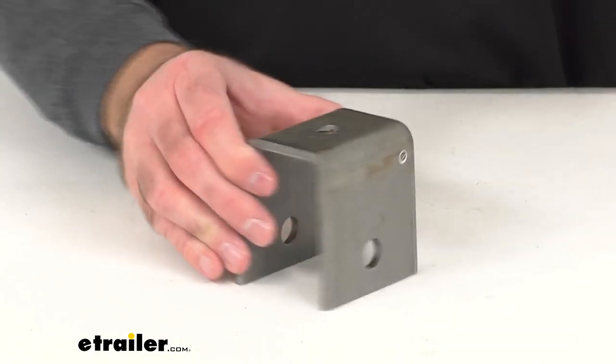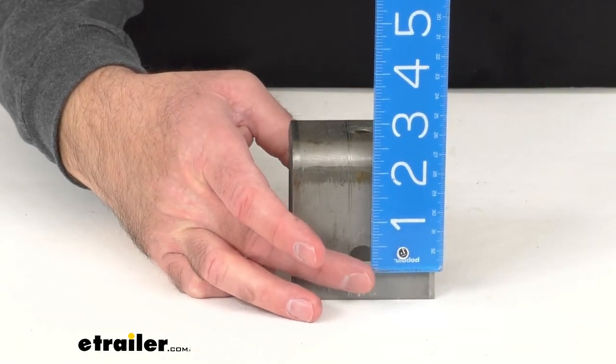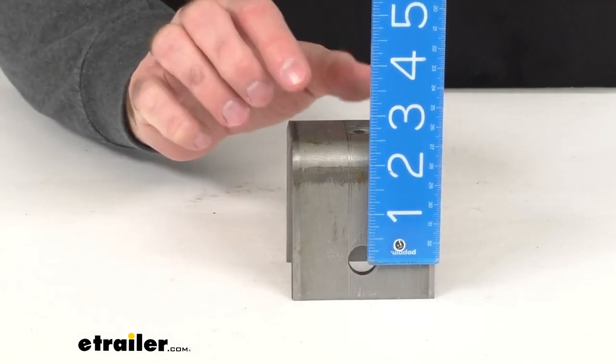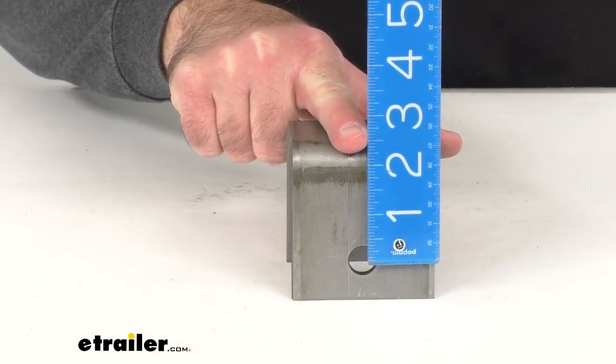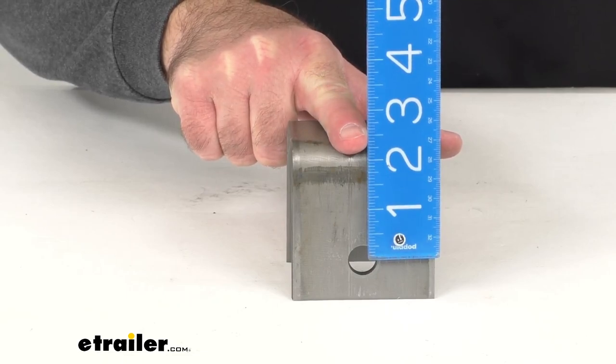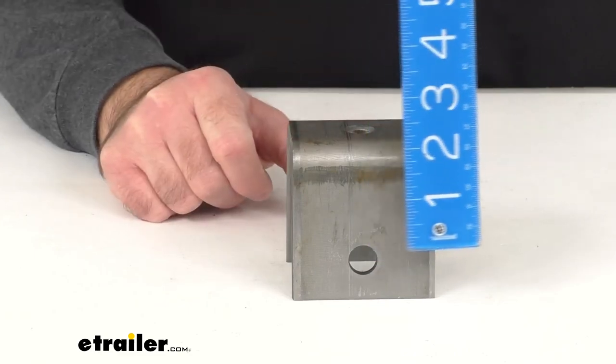And then the height from the center of our bolt hole all the way to the top of our hanger, we're sitting right at two and three eighths inches tall.